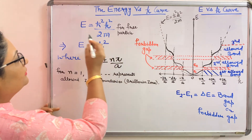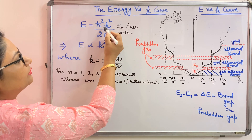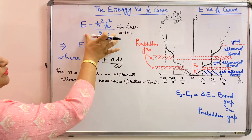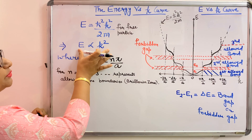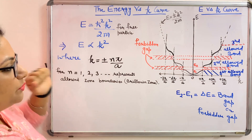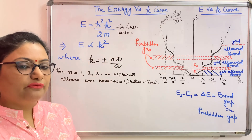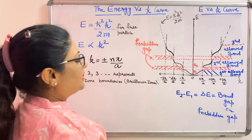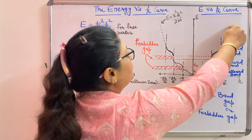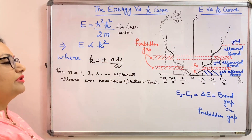As we know, the energy of a free particle is given by E = ℏ²K²/2m. This shows that the energy is proportional to K square, which means that the behavior of energy with K vector must be parabolic. This dotted curve, showing the parabola, represents the energy for a free particle.